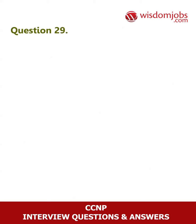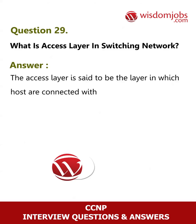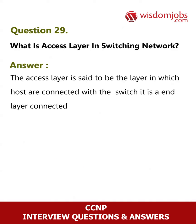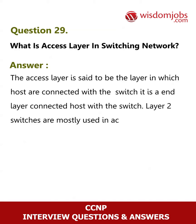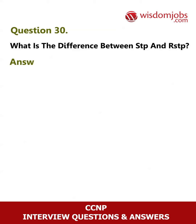All routers and switches are connected to the core network. Question 29: What is the access layer in a switching network? Answer: The access layer is the layer in which hosts are connected with the switch. It is an end-host-to-switch layer, and layer 2 switches are mostly used in the access layer.